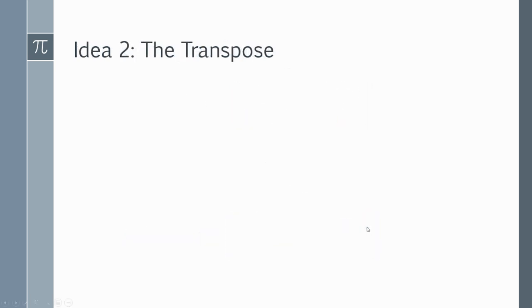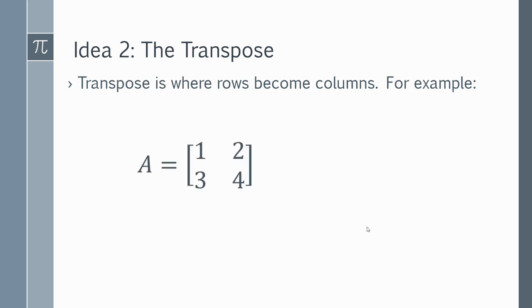Really very simple. The next really simple idea is the transpose. This shouldn't be difficult. Transpose is just where rows become columns. For example, if you have a matrix one, two, three, four, you just switch. Your one and two becomes a column here. So your row becomes a column, row becomes column, and that is a transpose.